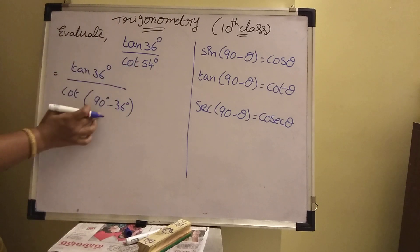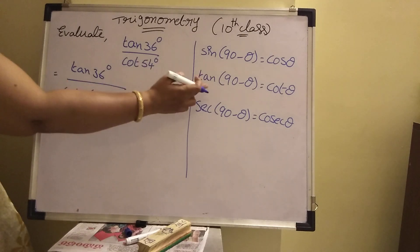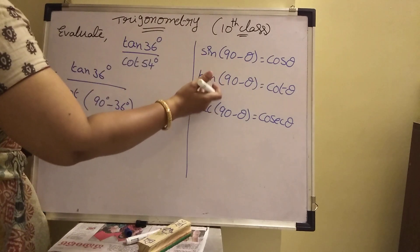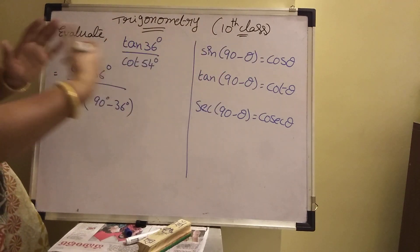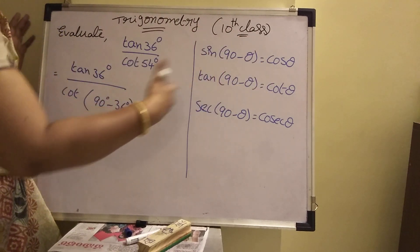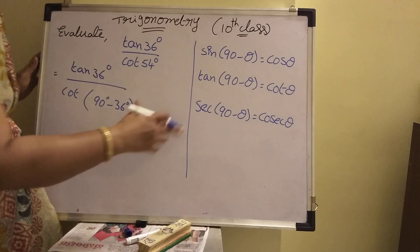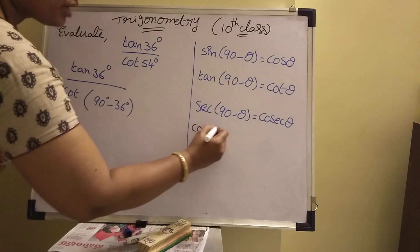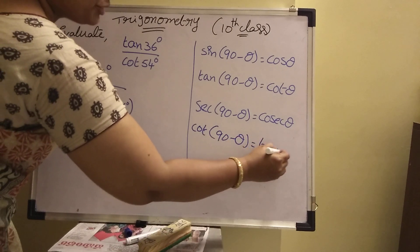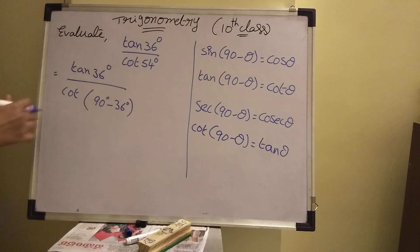Now see, cot of 90 minus 36. Now 90 minus theta, cot of 90 minus theta is tan theta only. This cot means tan only. Here, same sign means cos, cos also sine that way. Like that, tan cot, cot tan. Got it?